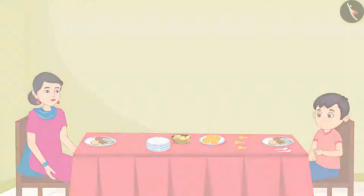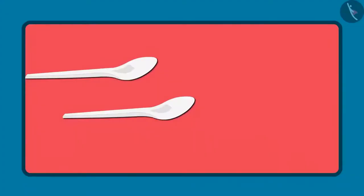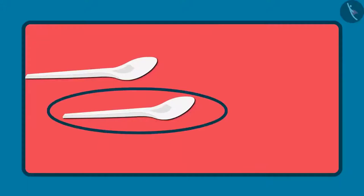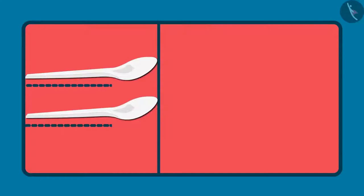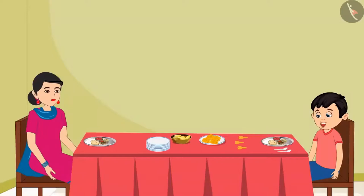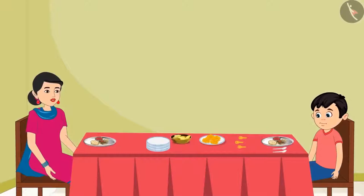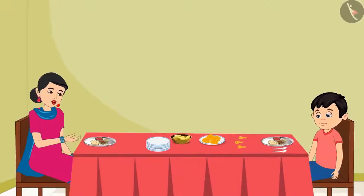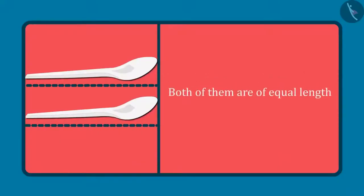Chotu disagrees: No, mummy. See, this spoon is long and this spoon is short. Oh, no, Chotu. This spoon looks longer to you because it is placed a little ahead. Keep both the spoons together so that one end of both the spoons is together. Okay, mummy. Here you go. Now, tell me, out of these two spoons, is either of them long or short? Or both the spoons are of the same length? Oh, yes, mummy. Both of them are of the same length. Understood.